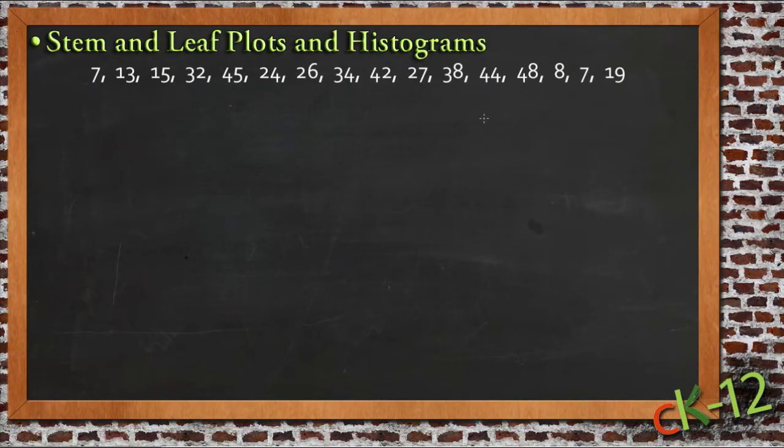What I have here is just basically a random series of numbers and I want to show you how these numbers would fit into a stem and leaf plot or a histogram. So the first one we'll do is the stem and leaf.